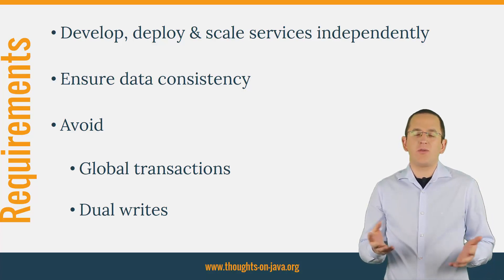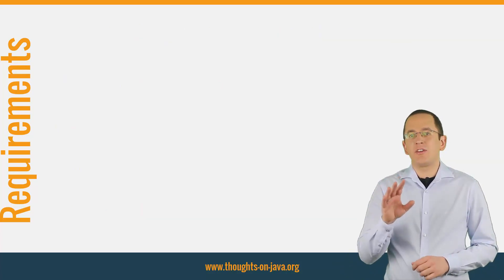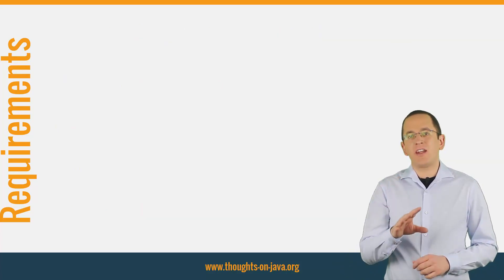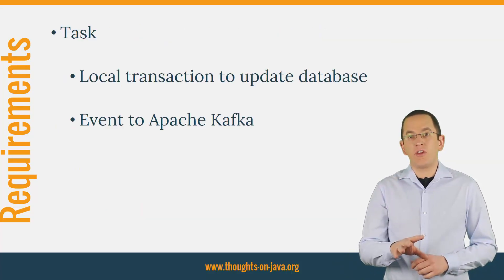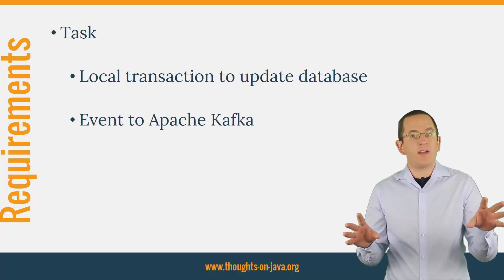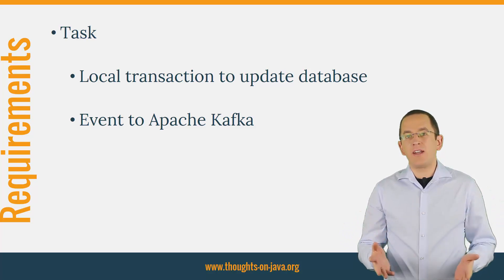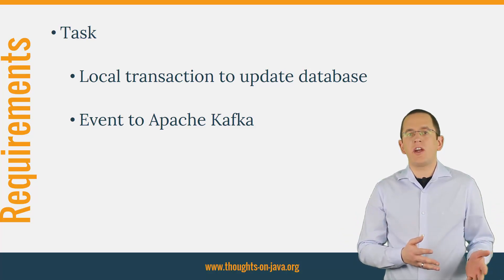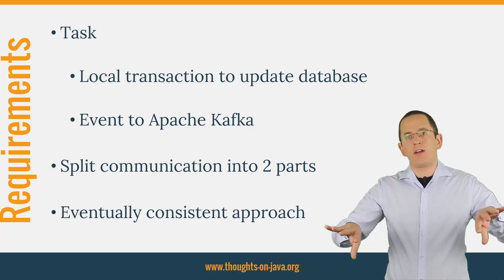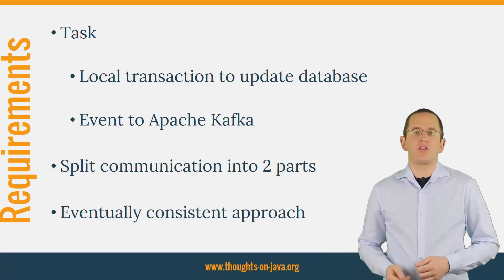And as Gunnar Morling says, friends don't let friends do dual writes. So you need a pattern that enables you to use a local transaction to update your database and to trigger a message that gets sent to Apache Kafka. That might sound impossible, but it's possible if you use the Outbox pattern to split the communication into two parts and accept an eventually consistent approach.